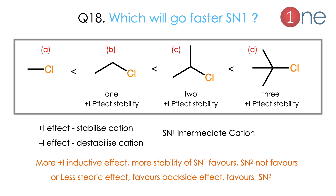Next: which substrate undergoes SN1 faster — those with different numbers of methyl groups? In SN1, a carbocation forms, so the intermediate stabilized by more methyl groups forms more readily. D has 3 methyl groups — hyperconjugation and the +I effect are greatest. C has 2, B has 1, and A has none. More methyl groups means stronger +I effect stabilizing the cation, so faster SN1 reaction.